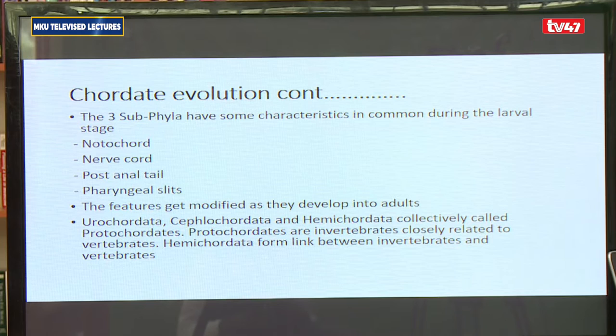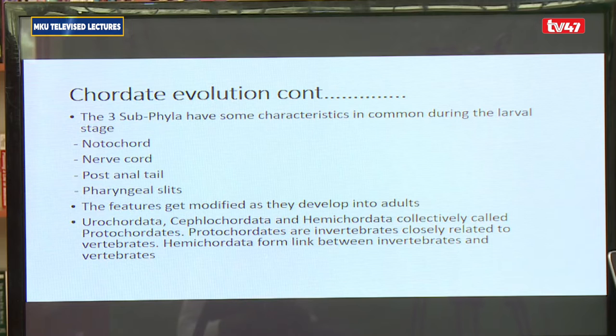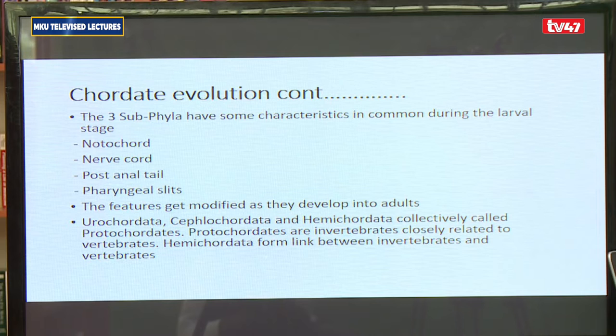All of them have these four basic characteristics in common in the larval stage, but as they undergo development from the larval stage to the adult stage, they undergo modifications. We end up with the adults of organisms in the three subphyla being different from one another. For the urochordata, the notochord exists only in the larval stage and is missing in the adult stage. Cephalochordata may have the notochord, and it persists as a notochord.